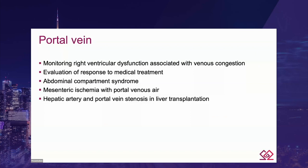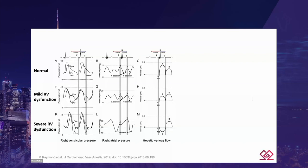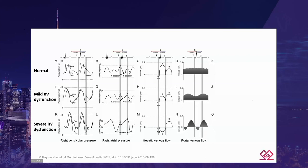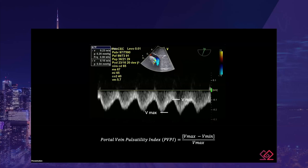Previously, we talked about the manifestation of RV failure on right atrial pressure curves, and the equivalent on hepatic vein Doppler with S-blunting then reversal as RV dysfunction progresses. As venous congestion secondary to RV dysfunction appears, the portal Doppler will become more and more pulsatile. With the portal Doppler tracing, we can calculate the portal vein pulsatility index, or PVPI, which is the ratio of the difference between maximum velocity and minimum velocity, divided by maximum velocity.